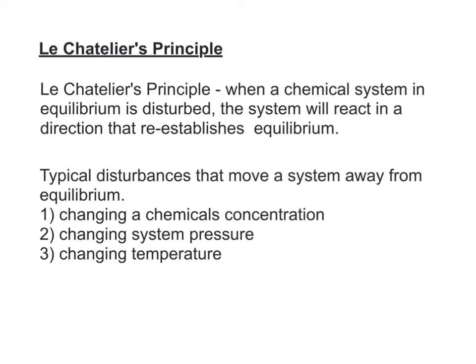We've learned previously that some chemical systems will react, but they won't react to completion. Instead, they'll come to a state of equilibrium, in which there is some combination of reactants and products mixed together. We've also learned that this mixture can be described by an equilibrium constant expression that gives the concentrations of products over the concentrations of reactants.